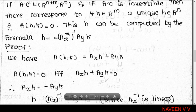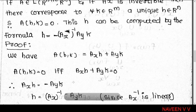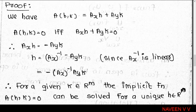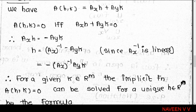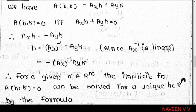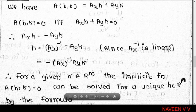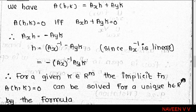So A(h, k) equals 0 is the equation to solve. Therefore h equals Aₓ⁻¹ of minus Aᵧk, which equals minus Aₓ⁻¹ of Aᵧk.